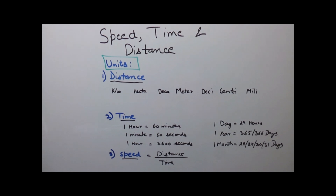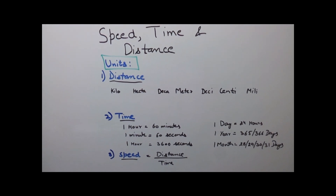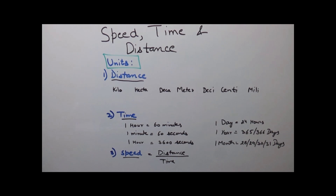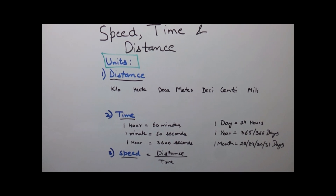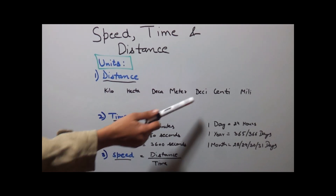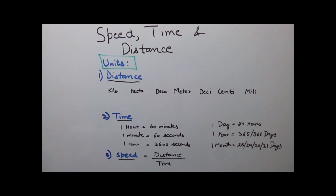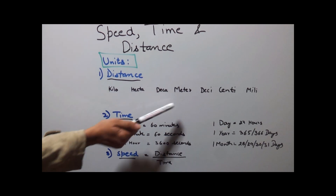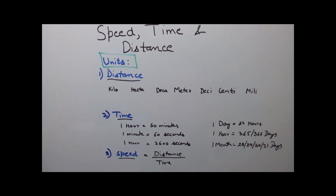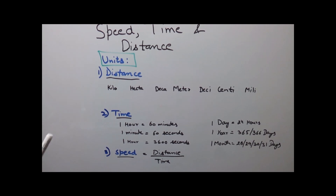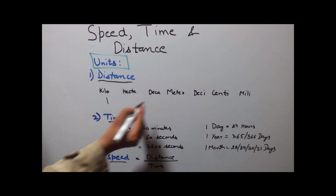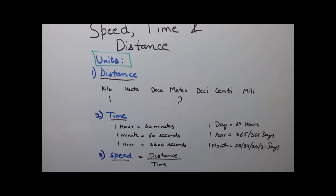Let's see different units of speed, time and distance. The common unit for calculating distance is meter. This is the basic unit, and other units like kilometer, hectometer, decameter, decimeter, centimeter and millimeter are dependent on this unit of meter. Now if you need to convert any of these units to another — say if you need to convert 1 kilometer into meters — how can you do this?